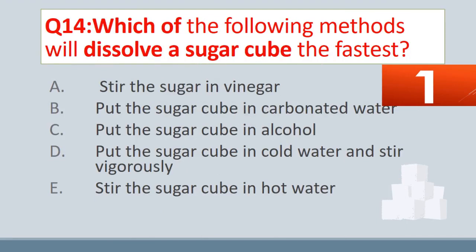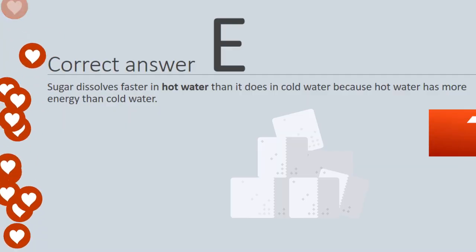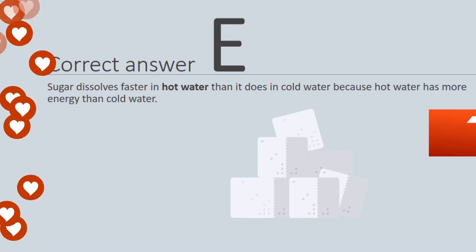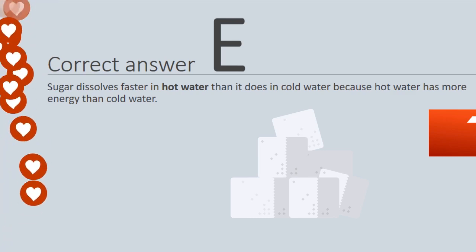Question No. 14. Which of the following methods will dissolve a sugar cube the fastest? A. Stir the sugar cube in vinegar. B. Put the sugar cube in carbonated water. C. Put the sugar cube in alcohol. D. Put the sugar cube in cold water and stir vigorously. E. Stir the sugar cube in hot water. The correct answer is E. Sugar dissolves faster in hot water than it does in cold water because hot water has more energy than cold water.